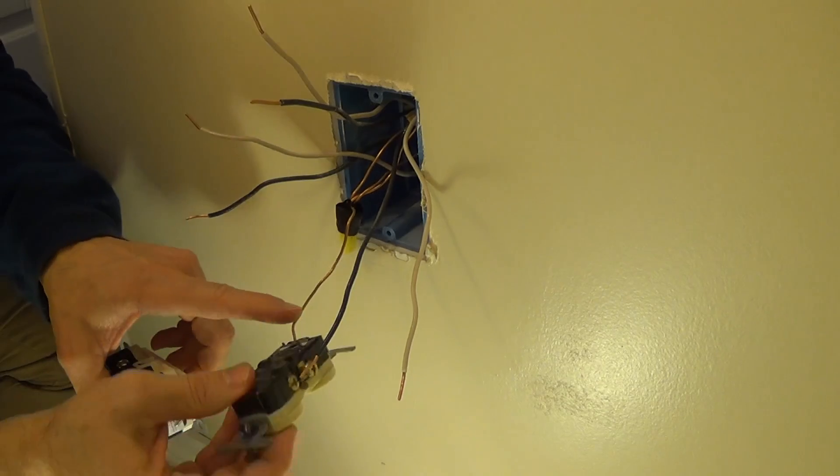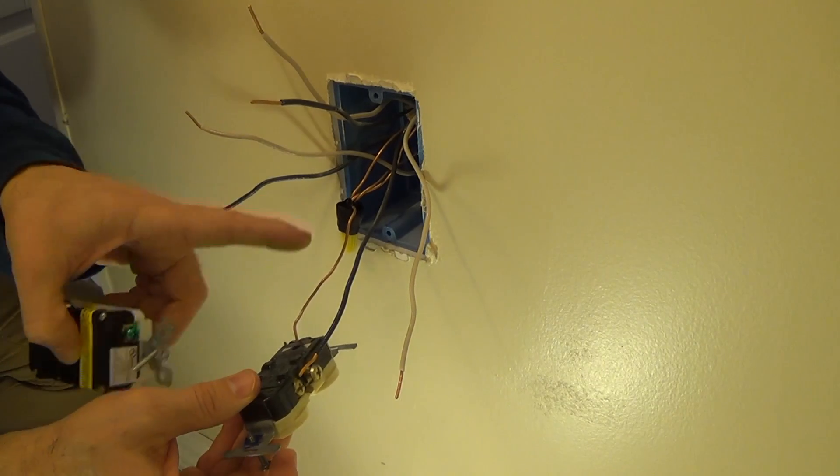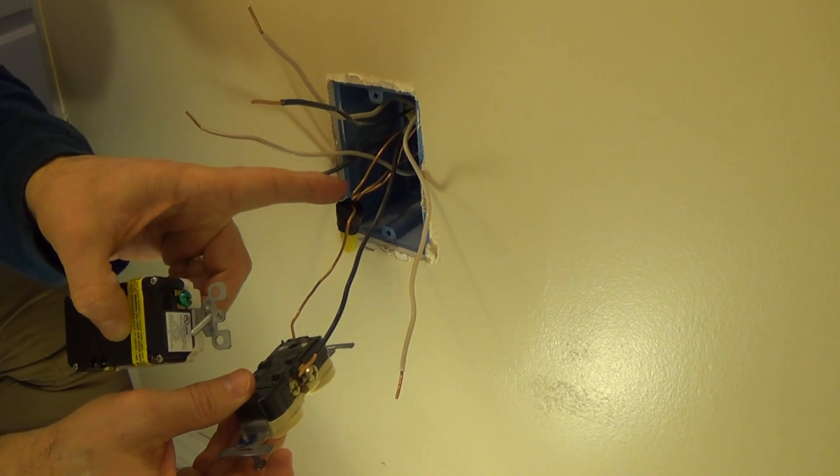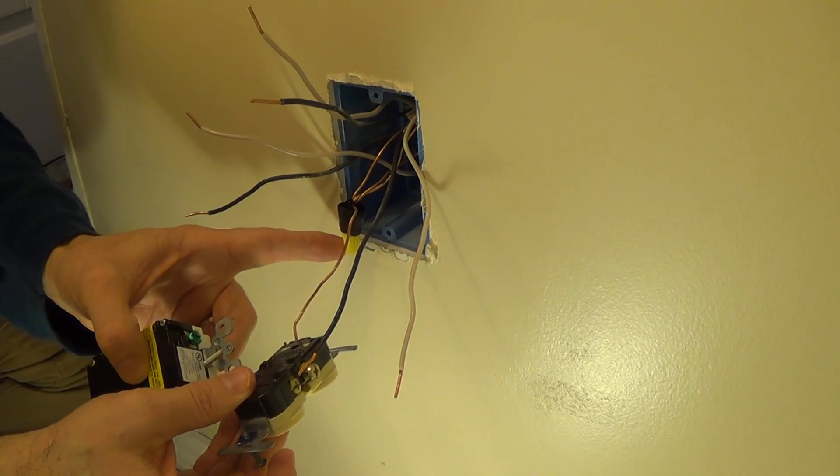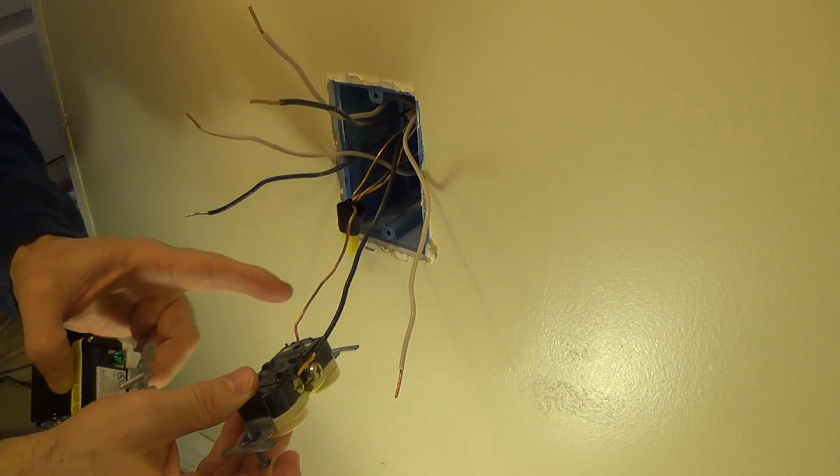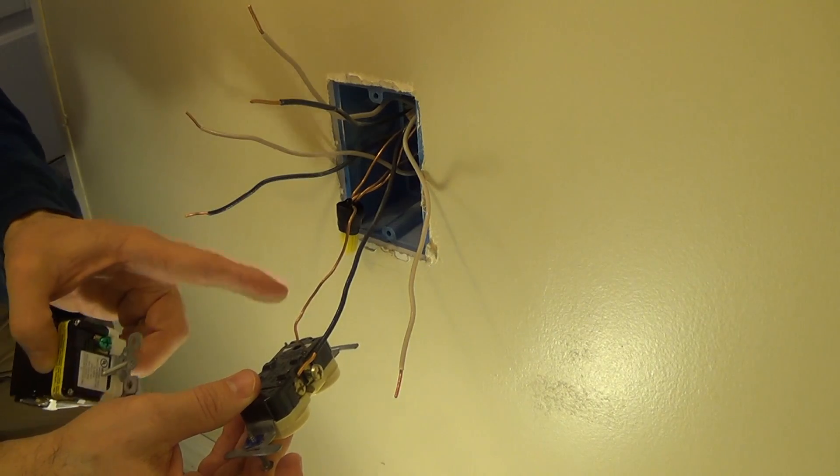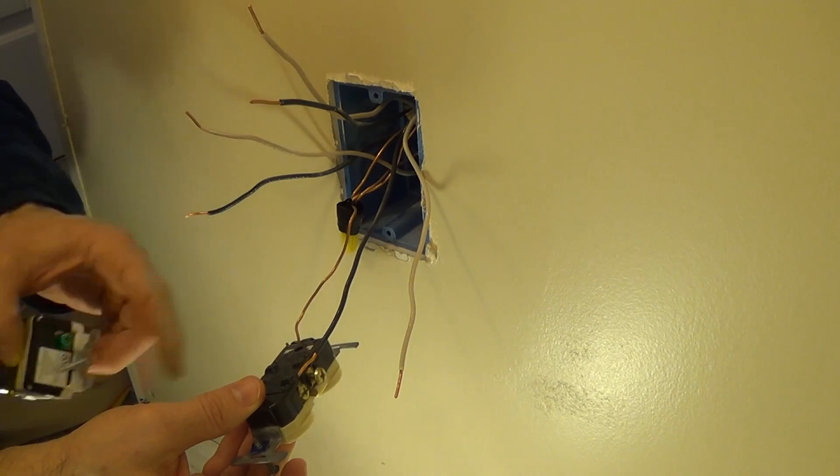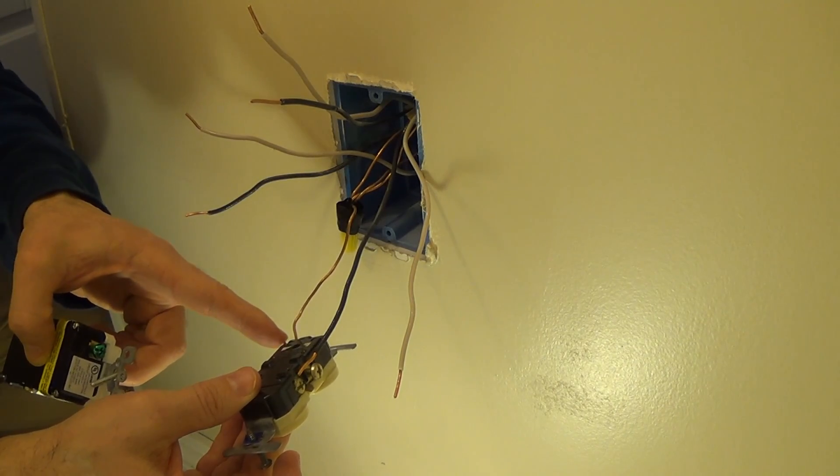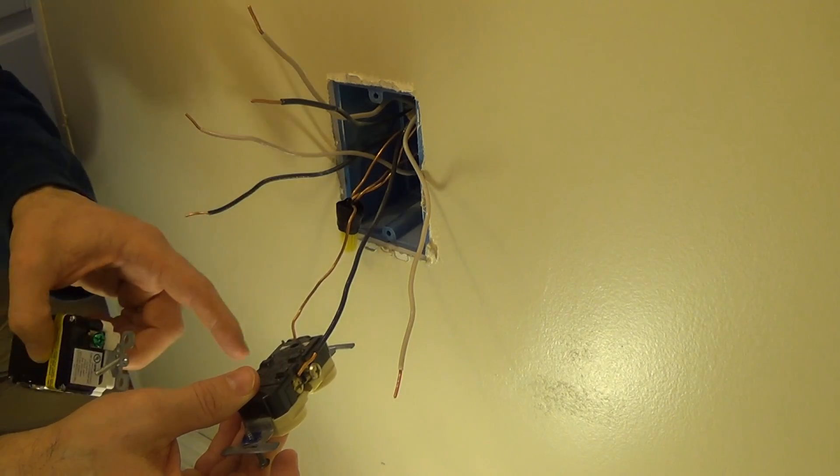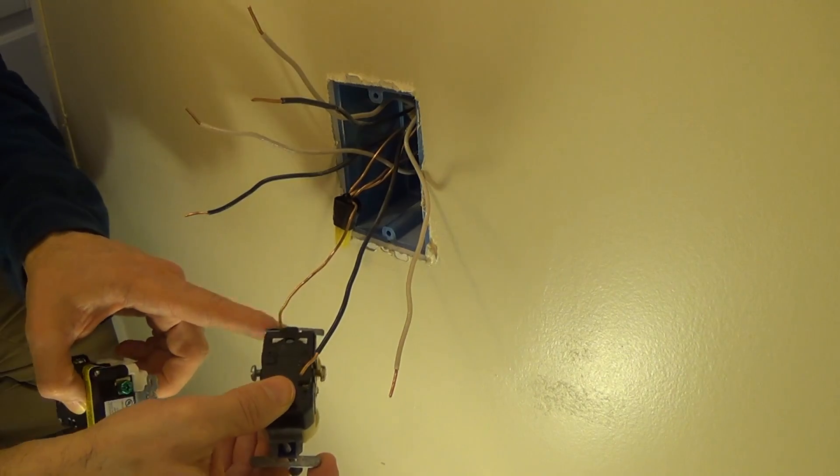This one that I took out, the standard receptacle, has what's called a pigtail for the grounds. You have three grounding wires here. It's connected with a little cap, a wire nut, and then you get a main wire coming in. This is generally per code and this is generally how you wire those things up. If you see a bunch of grounding wires in one terminal, that's wrong. You should really have a pigtail just like this.